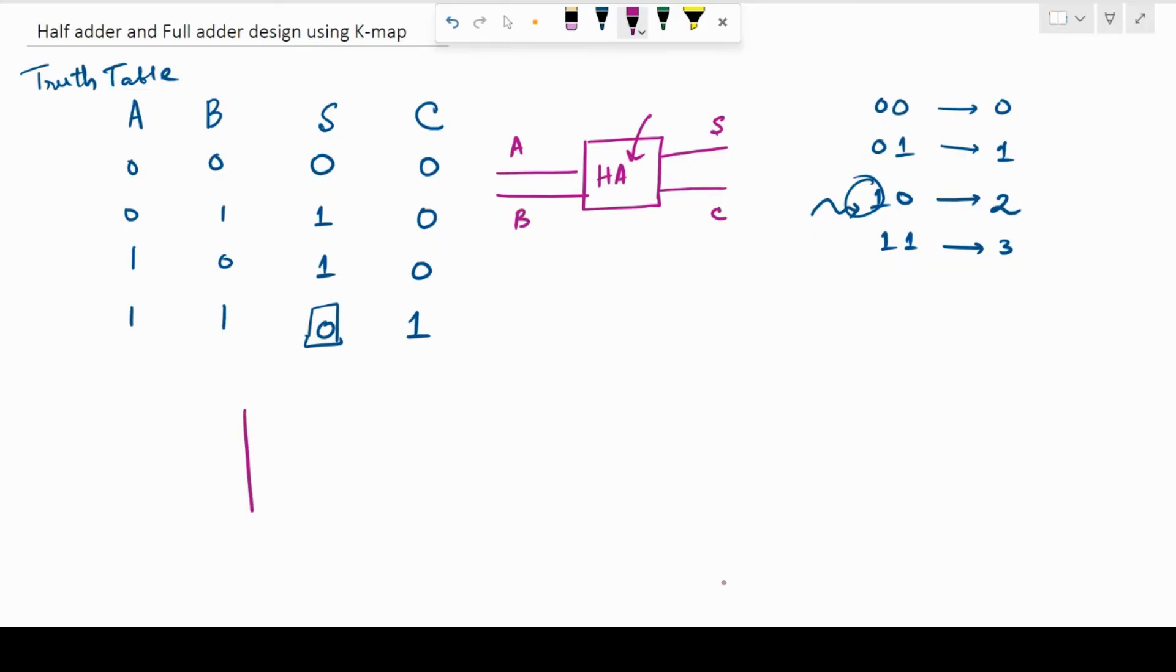So, I am going to draw a grid. This grid is going to carry the minterms. I have discussed about the minterms in one of my previous videos. So, the inputs are A and B.